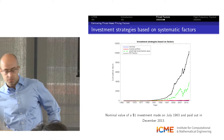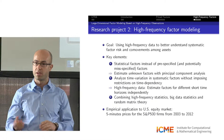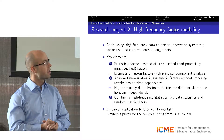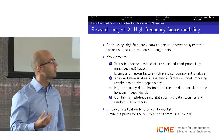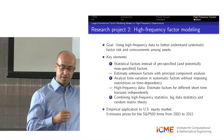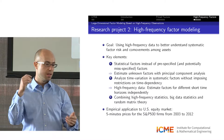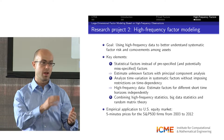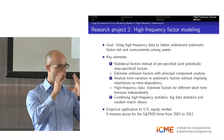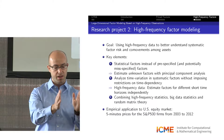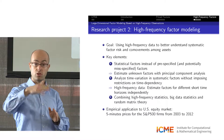Project number two is about understanding how systematic factors can change over time. We are combining high-frequency statistics with large-dimensional factor modeling and random matrix theory. The key idea is that with millisecond trading data for thousands of companies, I can use very short time horizons to independently estimate a systematic factor structure and analyze how it changes over time.